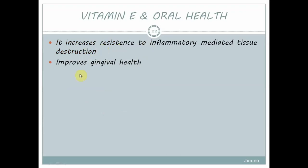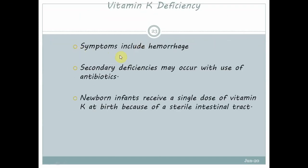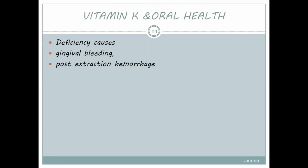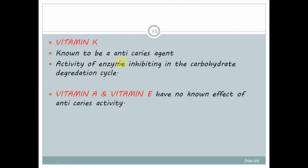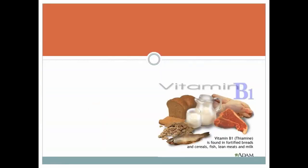Vitamin E increases resistance to inflammatory-mediated tissue destruction. Deficiency causes decreased stress inflammatory response and impaired gingival health. Vitamin K is essential for coagulation; deficiency causes hemorrhage. Secondary deficiency occurs with antibiotic use. Newborns receive a single dose of vitamin K because of their sterile intestinal tract. Gingival bleeding and post-extraction hemorrhage are problems associated with vitamin K deficiency. Vitamin K is also known as an anti-caries agent due to its enzyme-inhibiting activity in the carbohydrate degradation cycle.